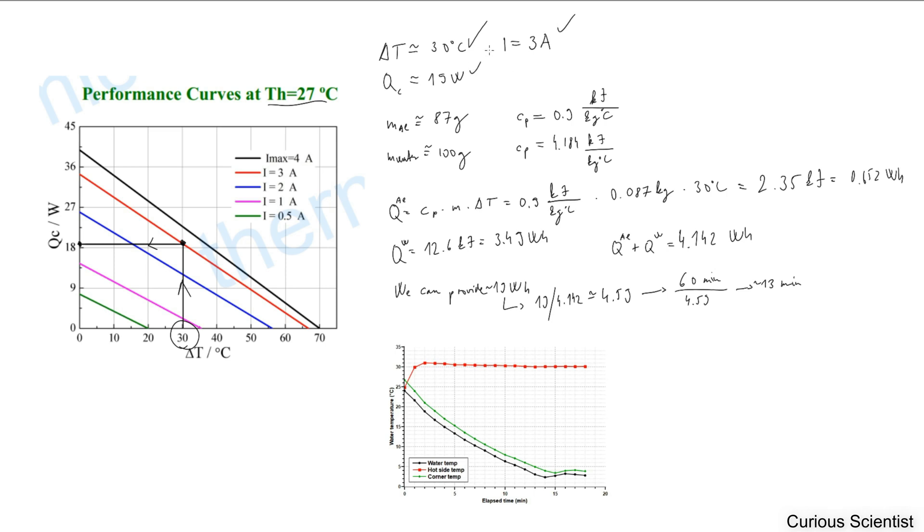I told you the details of the objects we are cooling. We have 87 grams of aluminum, which is the tank. It has a specific heat of 0.9 kilojoule over kilogram times Celsius degrees.